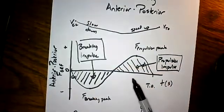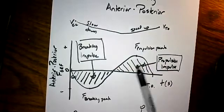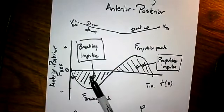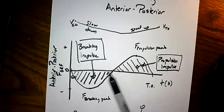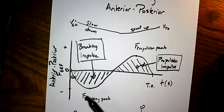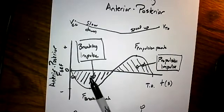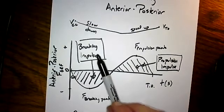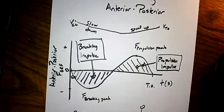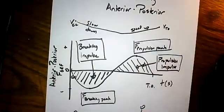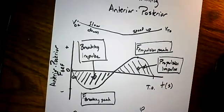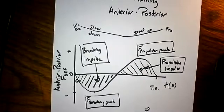If we're looking at sprinting — especially the first 15 meters of a 100-meter sprint — the propulsion area is really big and the braking area is small. When running at constant velocity, braking impulse and propulsion impulse are pretty close to each other. If slowing down, like at the end of a race, there's a lot of braking area and a small propulsion area. These parameters — braking impulse, propulsion impulse, peak force in the braking phase, and peak force in the propulsion phase — describe the anterior-posterior ground reaction force and what happens to velocity during stance.